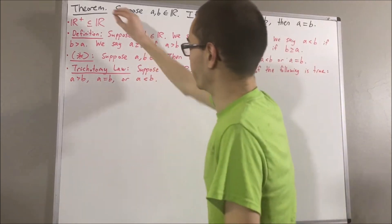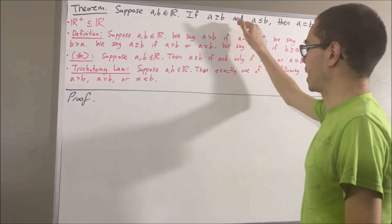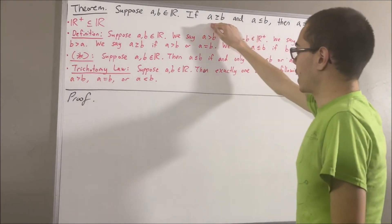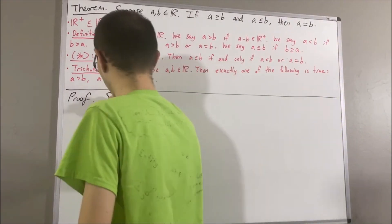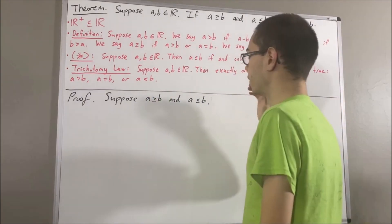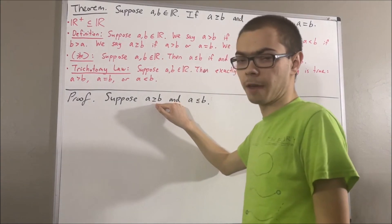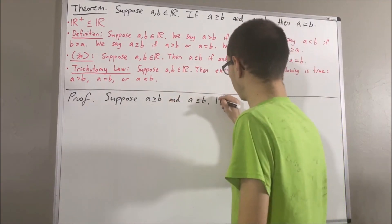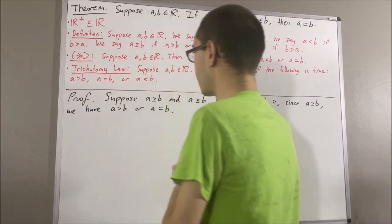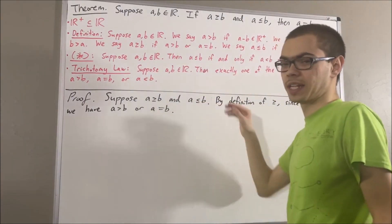So now let's get into proving this theorem. We're trying to prove: if a is greater than or equal to b and a is less than or equal to b, then a is equal to b. To prove that, suppose a is greater than or equal to b and a is less than or equal to b. The whole goal is to show that a is equal to b. By definition of greater than or equal to, since a is greater than or equal to b, we have a is greater than b or a is equal to b. And by our earlier result, since a is less than or equal to b, we have a is less than b or a is equal to b.